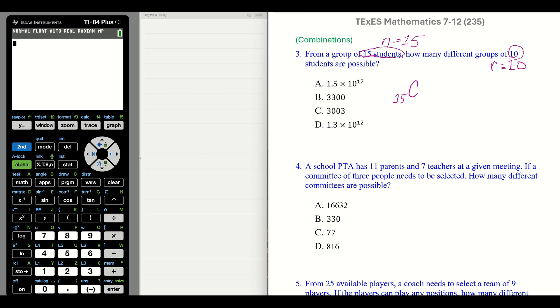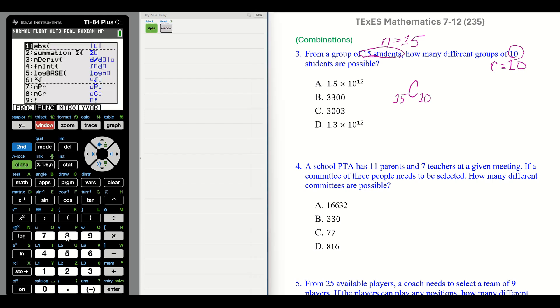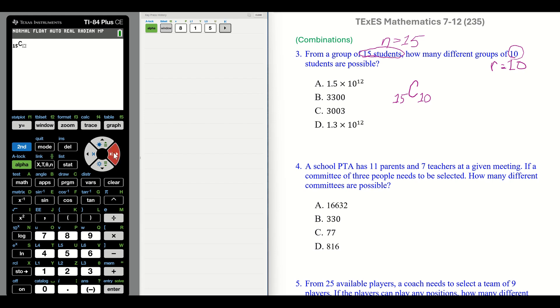So we need to deal with our combination. On the calculator, we have a C. So we're talking about 15 and 10. This is alpha window and combination is our 8. 15, 10 out of 15. 10 out of 15 combinations, that's 3,003. That's C.